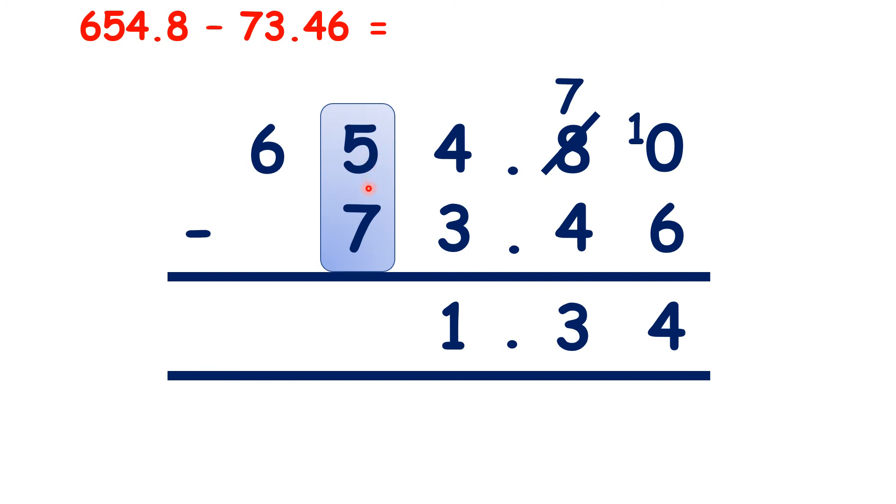We can't do 5 minus 7, so let's exchange. Now 15 minus 7 is 8. 5 minus 0 is 5, so we have our answer.